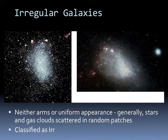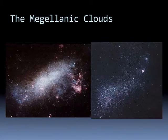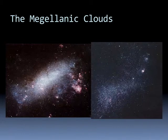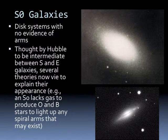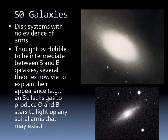The last type are irregular galaxies — neither arms nor uniform appearance, generally just stars and gas clouds scattered in random patches. They're classified as IRR. The Large and Small Magellanic Clouds are irregular galaxies; they're not elliptical, not spiral, just an isolated patch of stars that haven't quite formed a good shape yet. S0 galaxies are disk systems but show no evidence of arms. They were thought by Hubble to be intermediate between S and E galaxies. S0 lacks gas to produce the O and B stars that would light up any spiral arms that might exist.